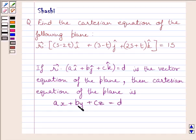Where A, B, C are the direction ratios of the normal to the plane. Now we will use this as our key idea to solve the given question.